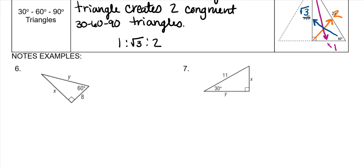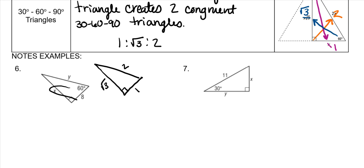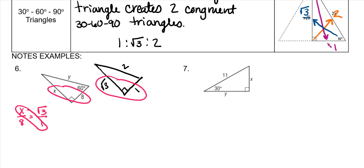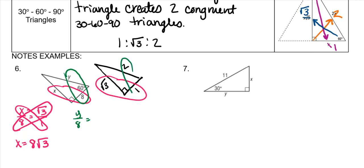Set up the formula triangle. Across from the hypotenuse is 2 with 30-60-90s, across from the 60 is the square root of 3, and across from the 30 is 1. To solve for x, we do x over 8 equals square root of 3 over 1. Cross multiply: x equals 8 square roots of 3. For y, you do y over 8 equals 2 over 1. Cross multiply: y equals 8 times 2, which is 16.